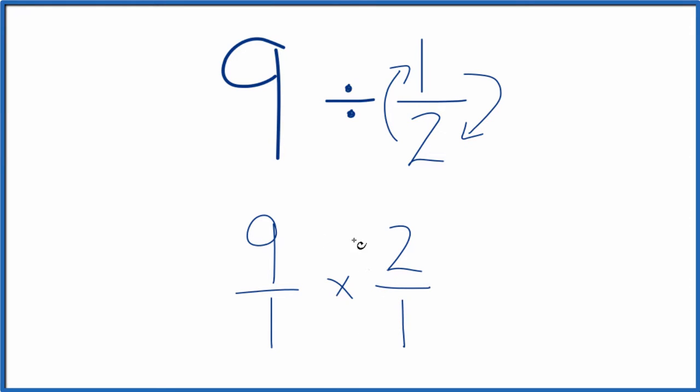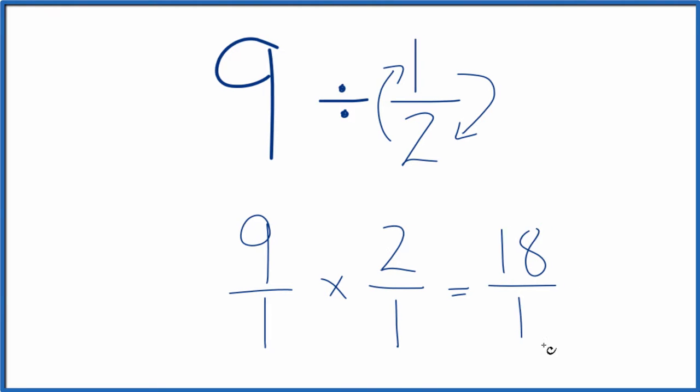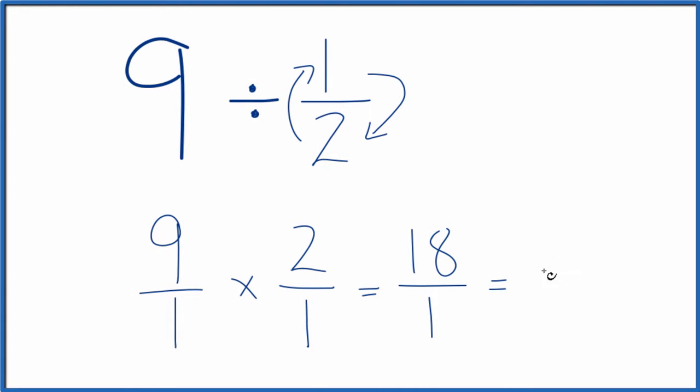And now when we're multiplying fractions, we multiply the numerators and denominators, and that gives us our fractions. 9 times 2, that's 18. 1 times 1, that's just 1. 18 divided by 1, that's 18.